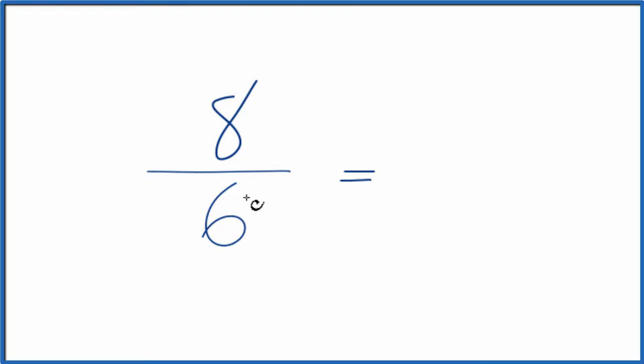To do that, what we need to do is find a common factor, something that goes into 8 and 6 evenly. Since these are both even numbers, I'm just going to divide 2 into the numerator and denominator.